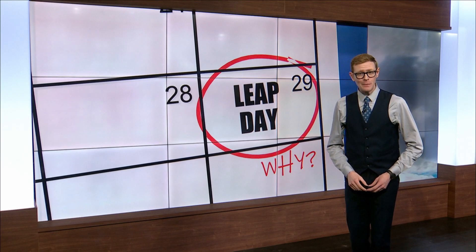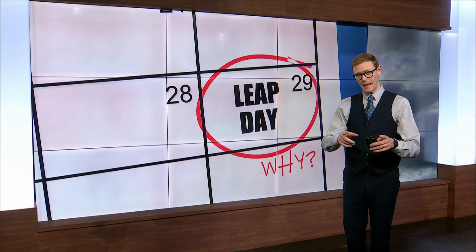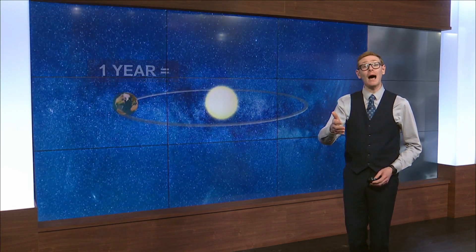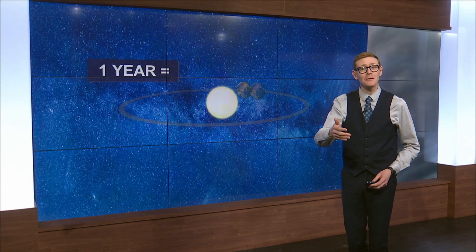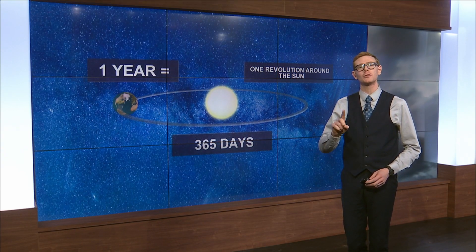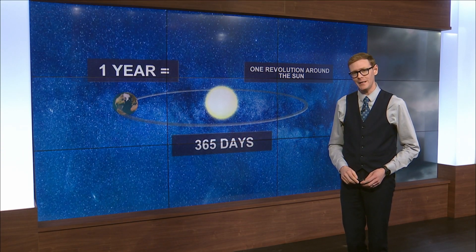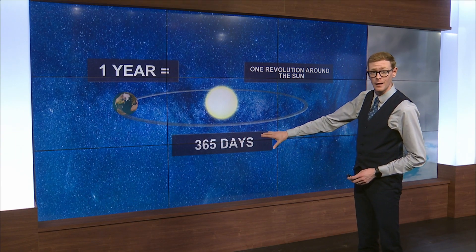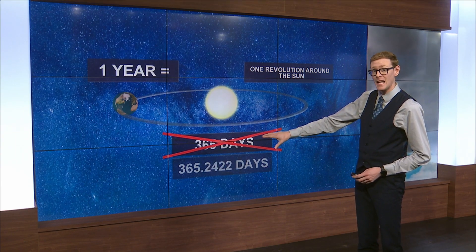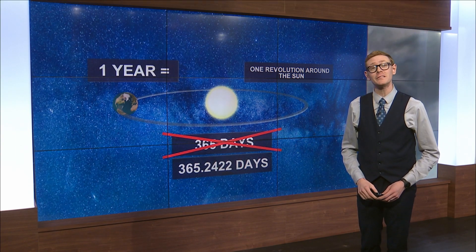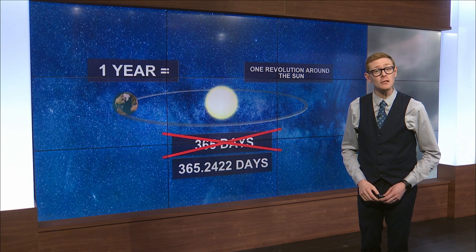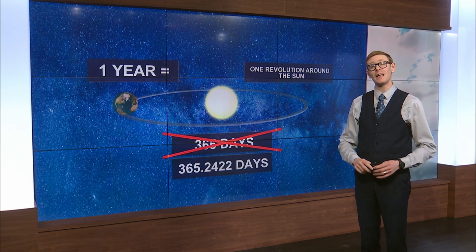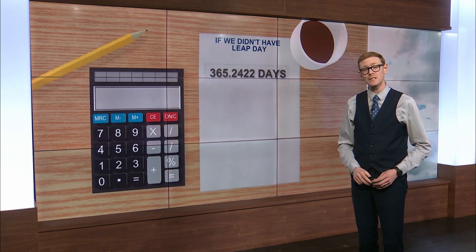It's the 29th of February, a day we have almost every four years. A year is defined by the time it takes for one trip around the sun. Our year is typically referred to as being 365 days, but it's actually 365.2422 days. And yes, that small addition makes a difference.